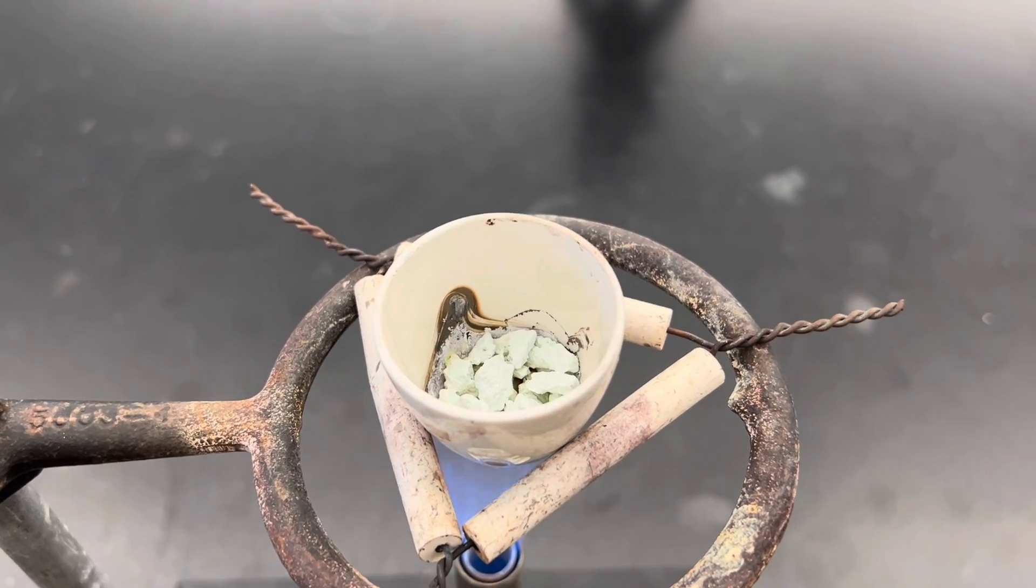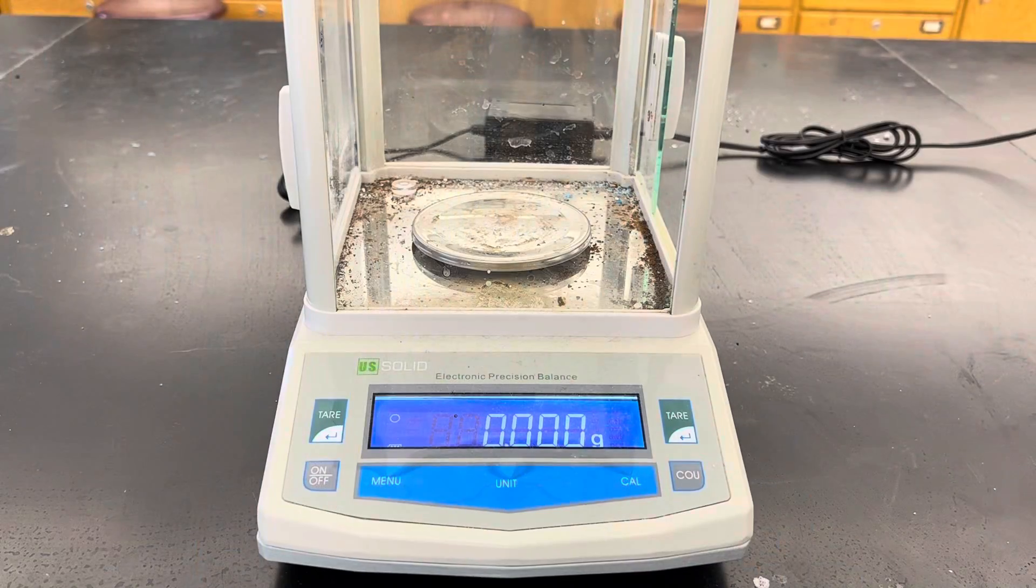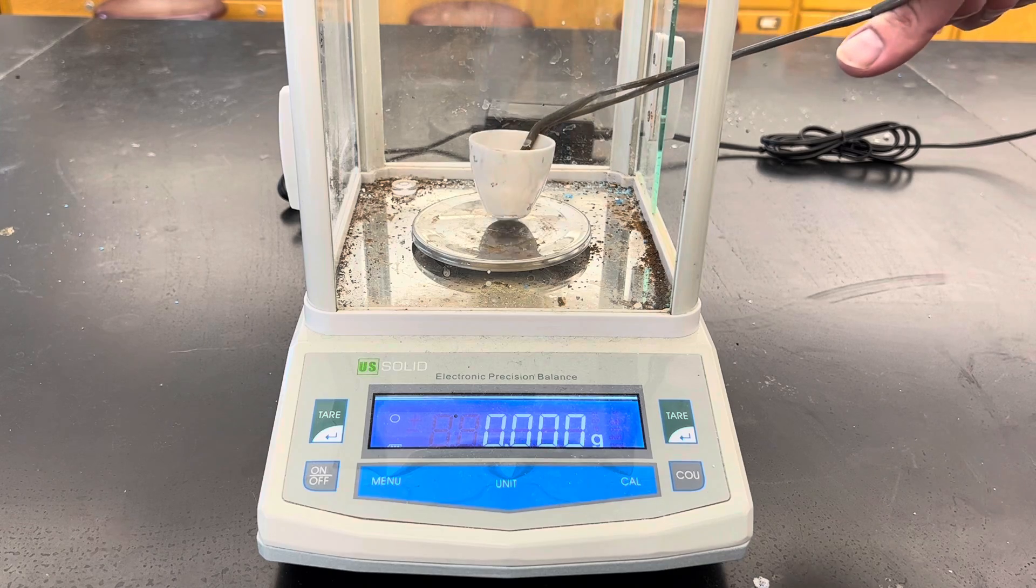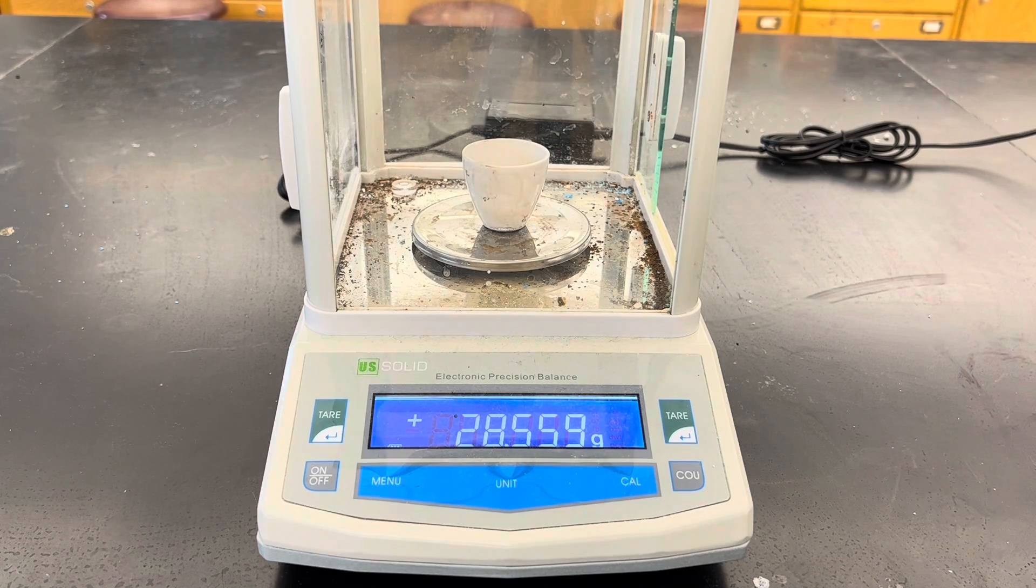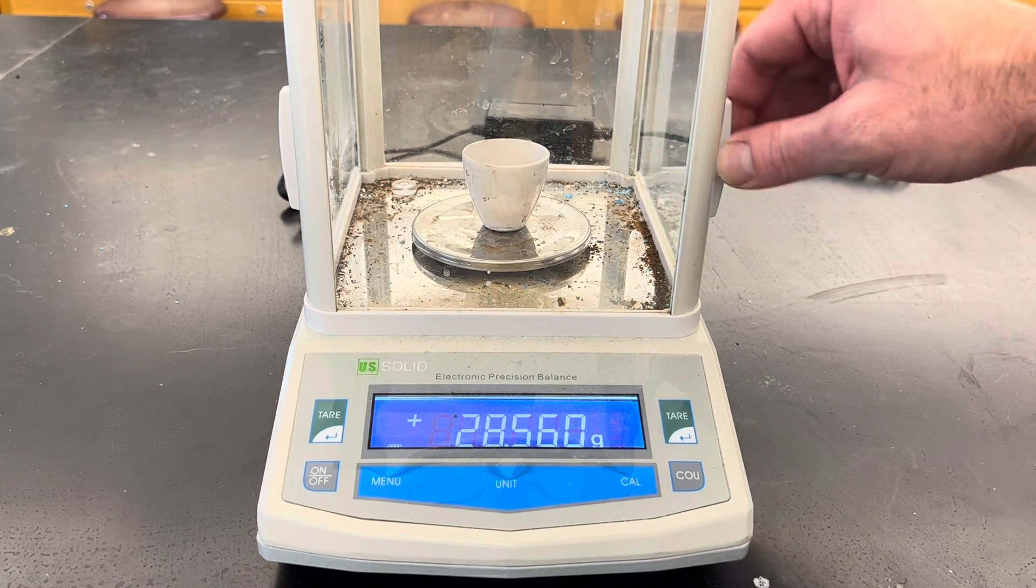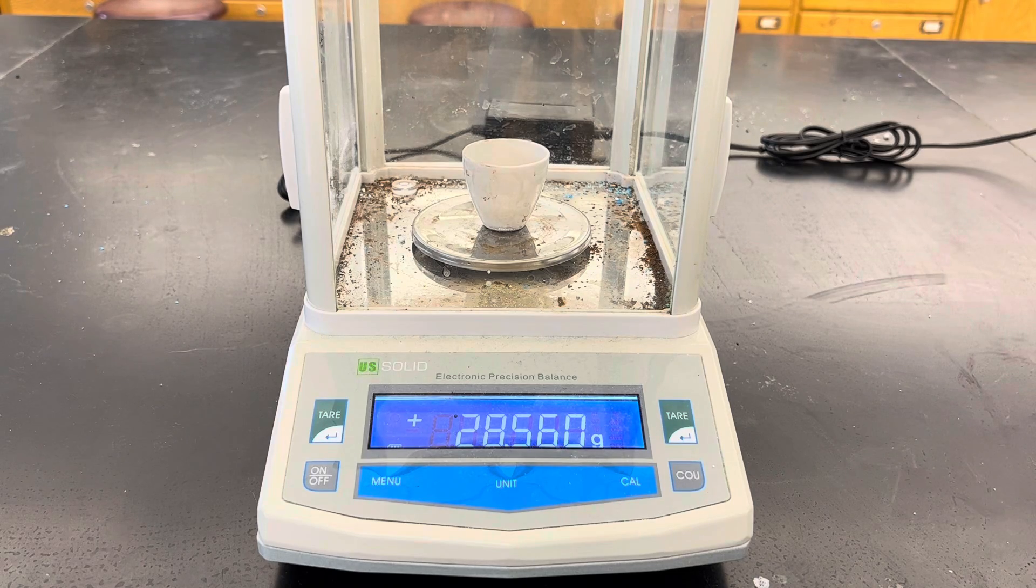Now after it's cooled, we'll check the mass of the crucible and the anhydrous compound, which is coming out to be 28.560.